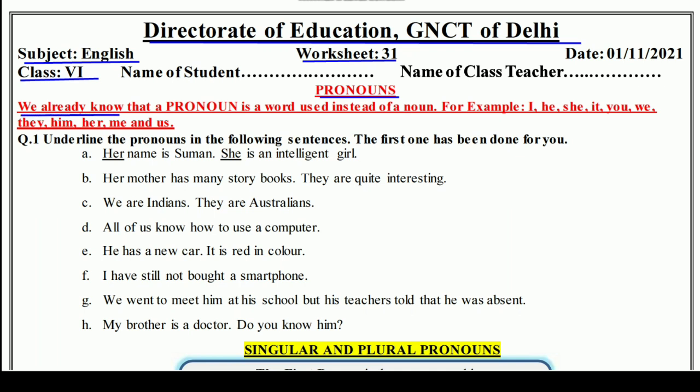We already know that a pronoun is a word used instead of a noun — a word used in the place of a noun. So we will learn from pronoun usage. For example: I, he, she, it, you, we, they, him, her, me, and us.